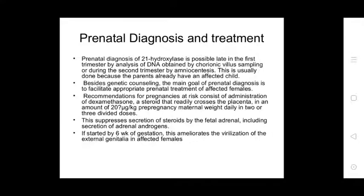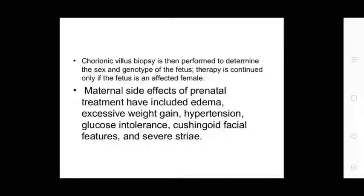With prenatal diagnosis, detection of 21-hydroxylase deficiency is possible late in the first trimester by analysis of DNA from chorionic villus sampling, or during the second trimester by amniocentesis. This is usually done when parents already have an affected child. Genetic counseling may be the main goal of the prenatal diagnosis facility. For prenatal treatment of affected females, recommendations consist of administering dexamethasone, a steroid that crosses the placenta, usually at a maternal weight-based daily dose in 2–3 divided doses. This suppresses secretion of adrenal steroids, including adrenal androgens. If started at 6 weeks gestation, it ameliorates the virilization of external genitalia in affected females. Chorionic villus biopsy is then performed to determine sex and genotype; dexamethasone therapy is continued only if the fetus is an affected female.